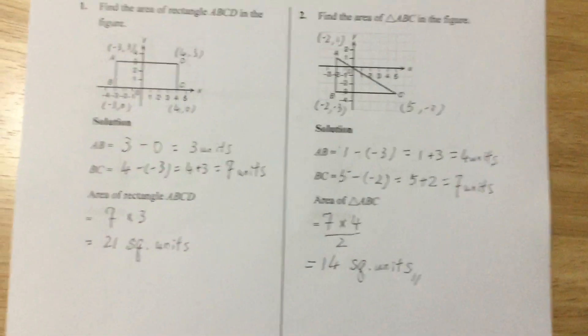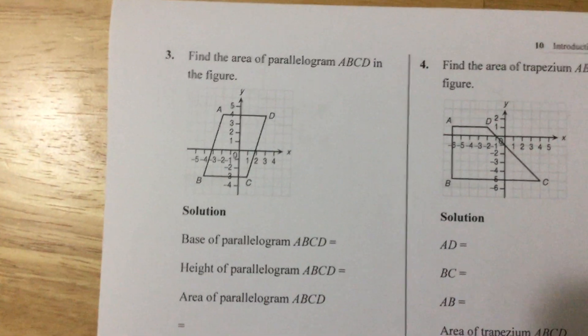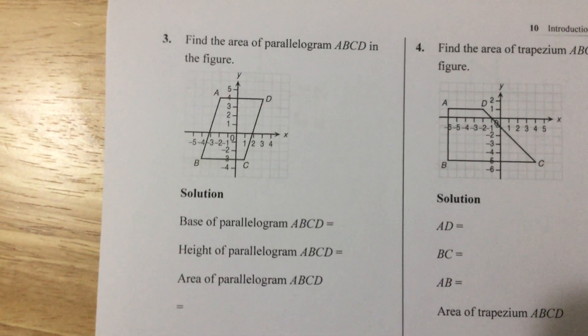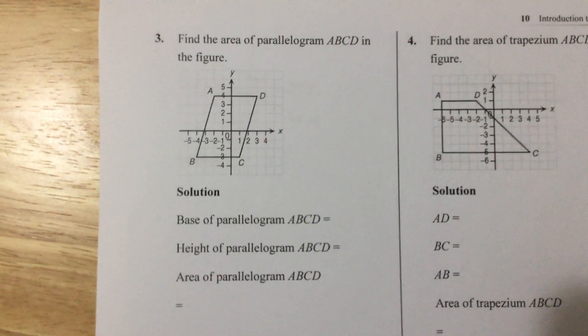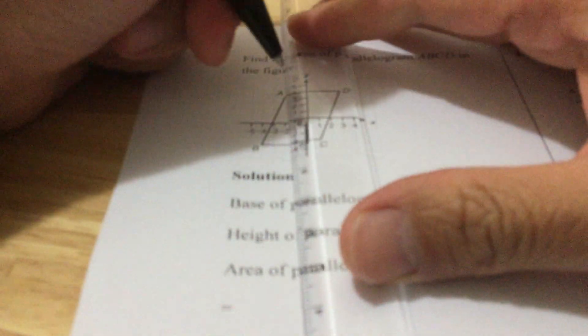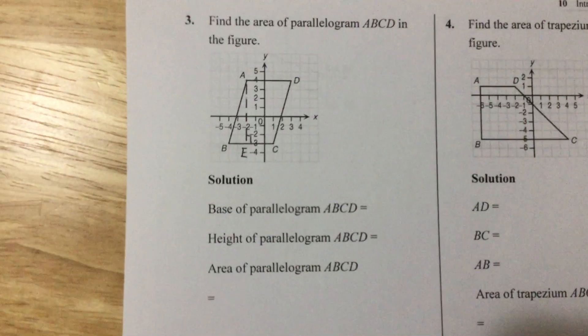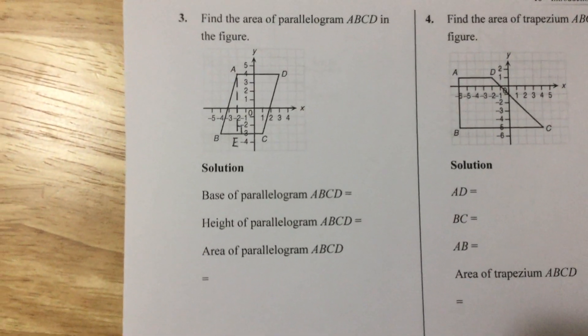Now we go to question 3. This time you are going to calculate the base and the height of the parallelogram ABCD. It's a little bit hard if we do not draw the height. Let me draw the height. We draw it and call the foot point E. I'll give you 15 seconds — please write down all the coordinates, then find the base, height, and area.